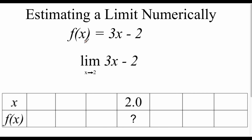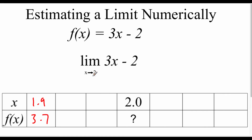In this example, we've got the function f of x equals 3x minus 2, and we're going to look at the limit of our function as x approaches 2. We're going to approach 2 from both the left and the right side. Starting on the left-hand side with a number smaller than 2, maybe we start with 1.9 as an x value. Plugging 1.9 into our function, we get about 3.7.